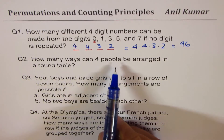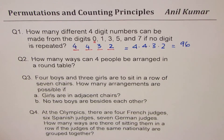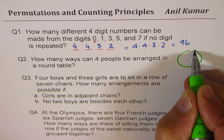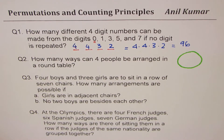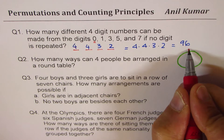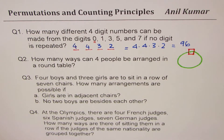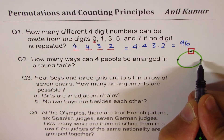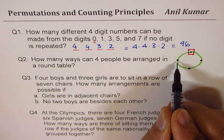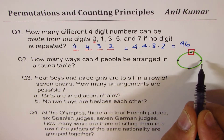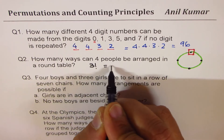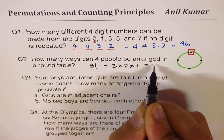How many ways can four people be arranged at a round table? Whenever you have a round table arrangement, you must always fix one person — otherwise there will be similar duplicate arrangements. There are four people; fix one of them, and the remaining three can change positions. So we have 3! = 3 × 2 × 1 = 6 ways.